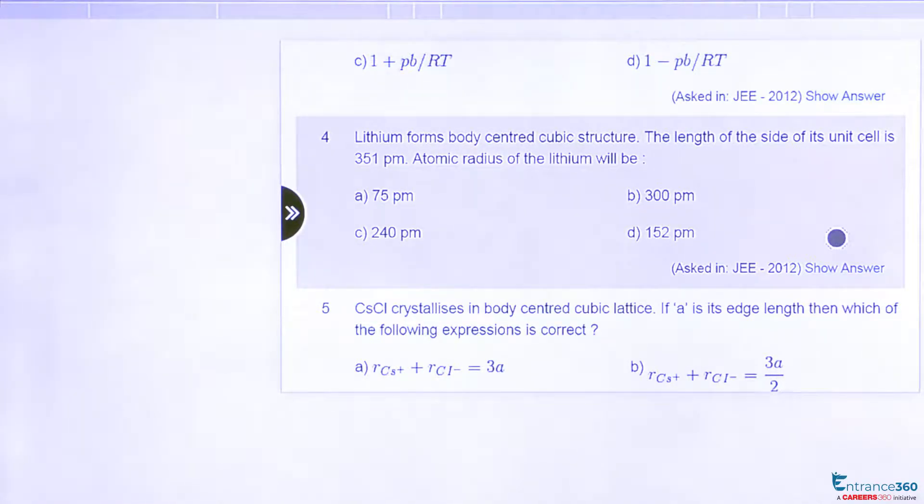The question is: Lithium forms body centered cubic structure. The length of the side of its unit cell is 351 pm. We have to calculate the atomic radius of lithium.